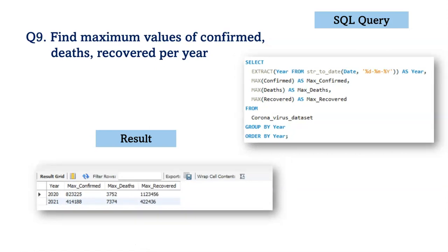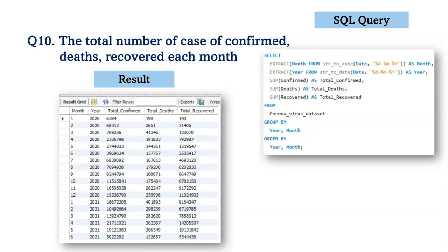Similarly, next we have to find the maximum values for confirmed, deaths, and recovered per year. To answer this, we have used the MAX function, grouped and ordered by a particular year. Next, we find the total number of cases for confirmed, deaths, and recovered each month using the SUM function, grouped and ordered by a particular month of a particular year.